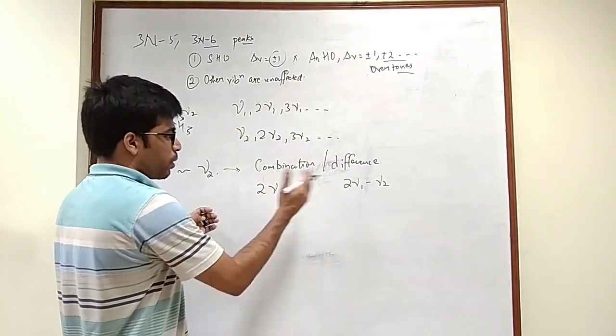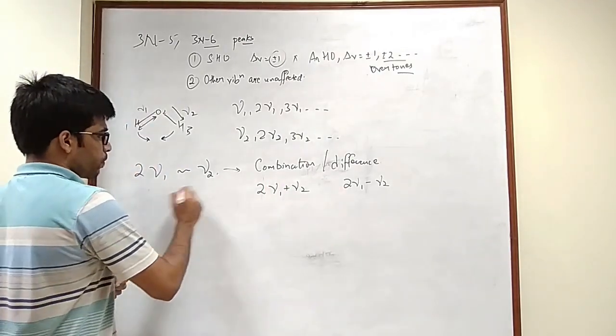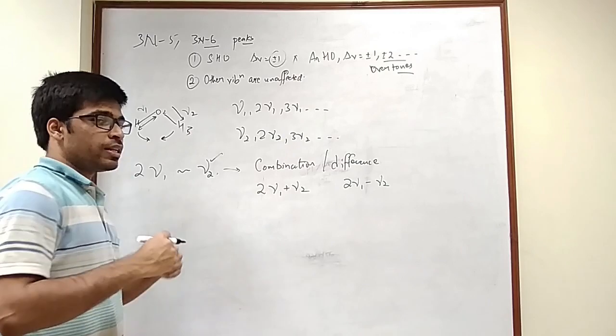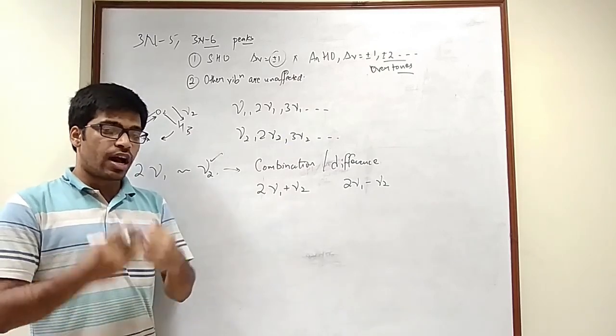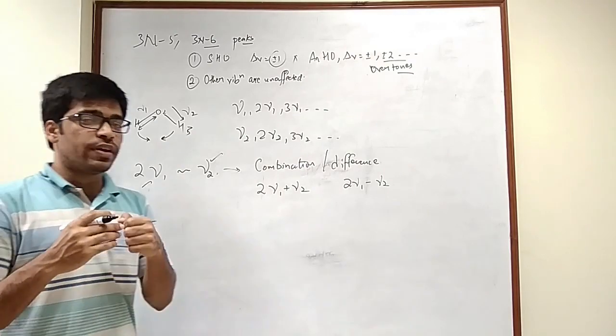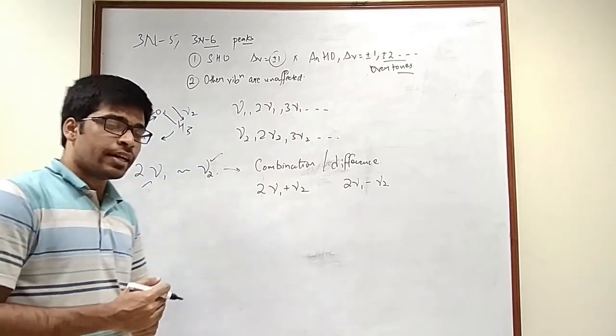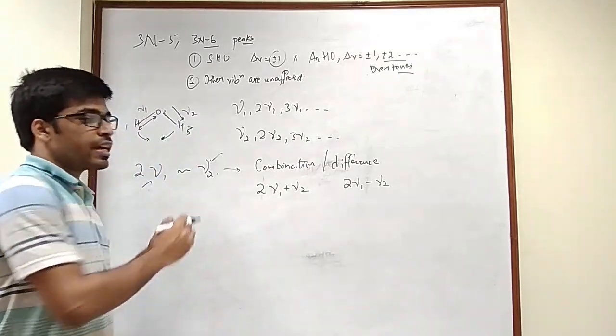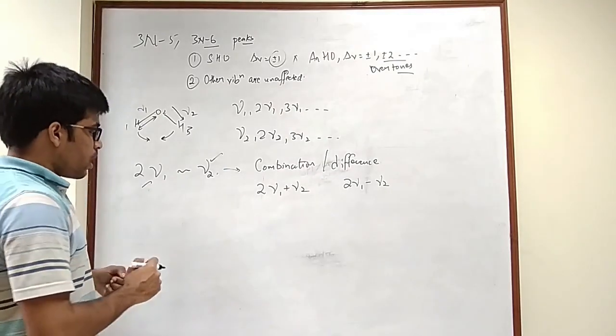What is going to happen because of this? If you see mu2 is fundamental so that means it will have a very high intensity, whereas this being overtone will not have very high intensity. But when they are interacting, the intensity gets also split.